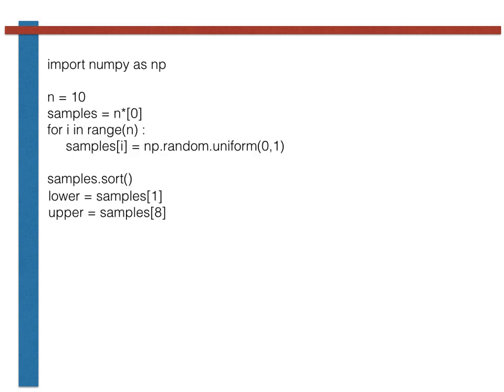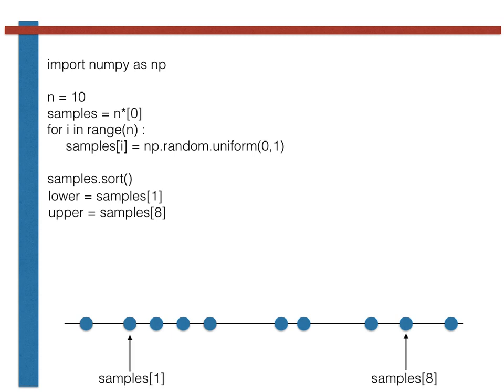This process of sorting our samples into ascending order is useful in other contexts too. For example, consider the code shown here. This is once again creating a list containing 10 random variables and sorting it into ascending order. Now, though, instead of finding the median, we are taking the second and ninth elements in our list, and using these to define a range that encompasses 80% of the samples that our random variable took.